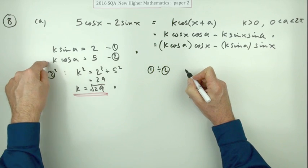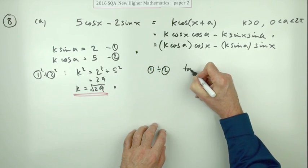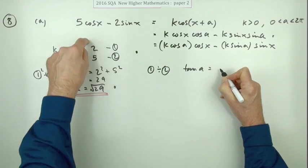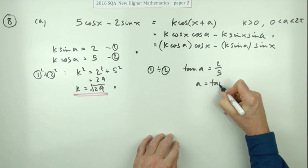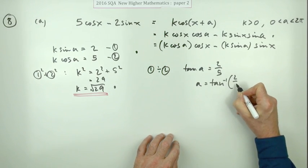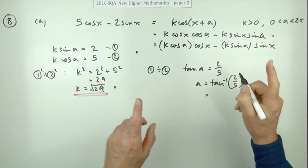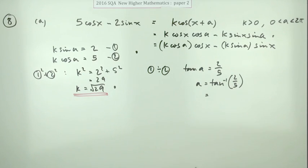The way you get to a is to remove the k's by dividing them. If you do one divided by two, k would cancel out, k sine over cos becomes tan, and that would equal two upon five, which means a is the inverse tan of two fifths. Now it's in radians and that's not one of the fractions that you know.